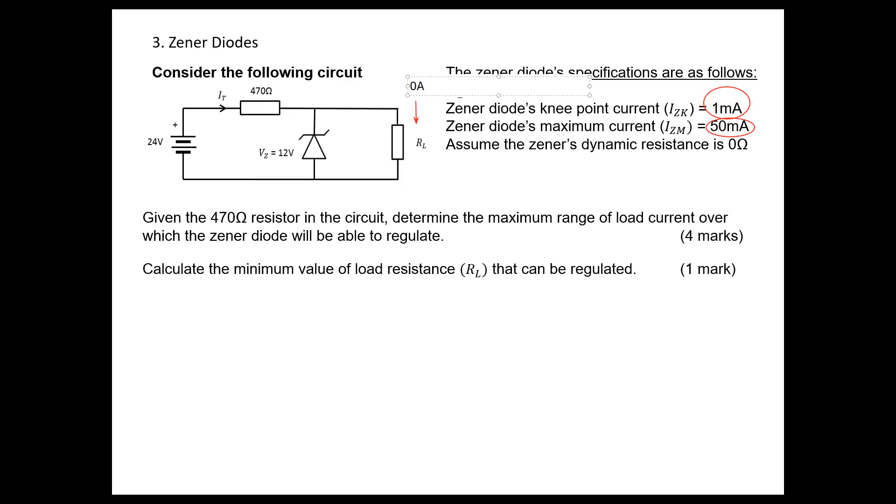This is allowed actually, because when we have zero current through the load, the total current will flow through the Zener.